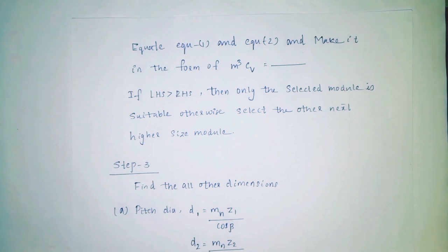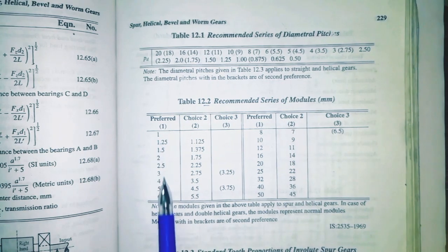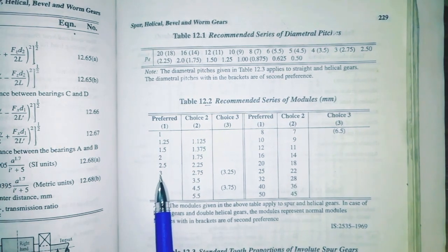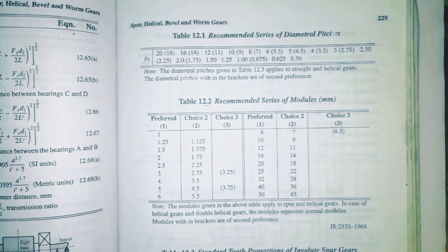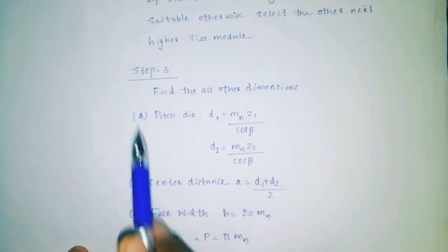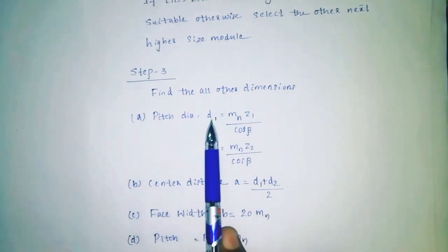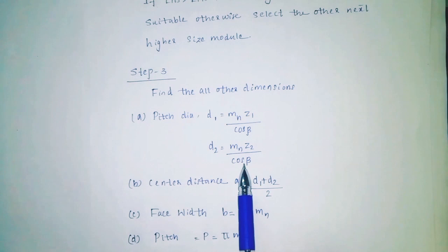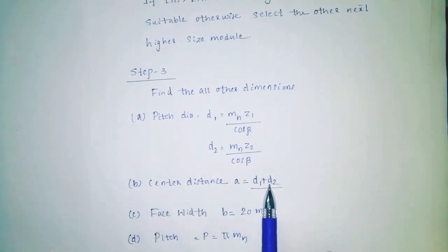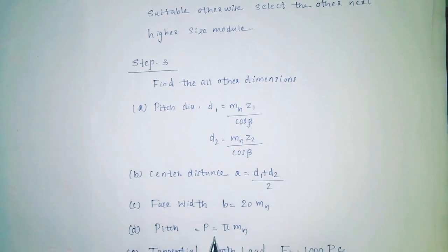Step 3: Find all other dimensions. From the recommended series of modules, preferred numbers greater than 3.5 — select module 4. Pitch diameter: D1 = mn·Z1 / cos β, D2 = mn·Z2 / cos β. Center distance A = (D1 + D2) / 2. Face width B = 20·mn. Pitch P = π·mn.